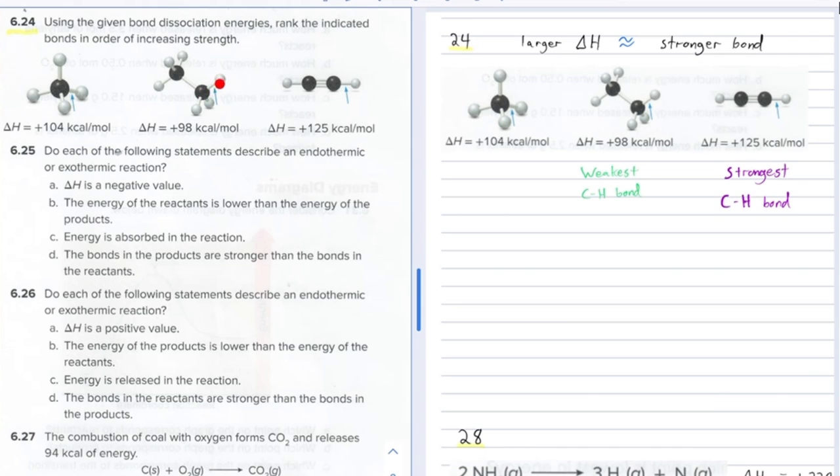So what about a mole of these over here, these carbon-hydrogen bonds which are in a different molecule? Well, it's only 98 kilocalories per mole to break these, and so these bonds are not as strong as those because it takes less energy to break them.